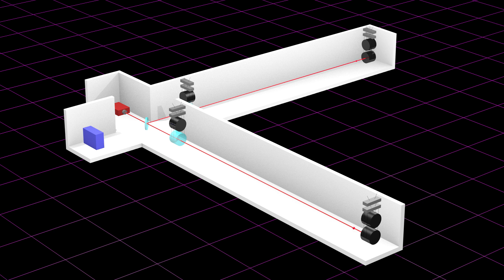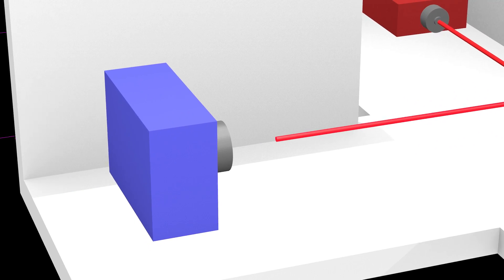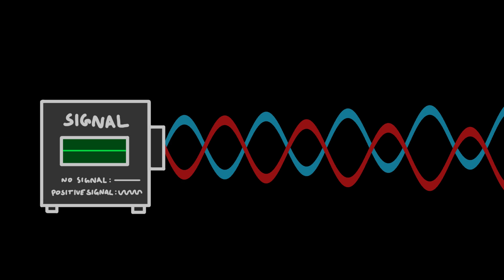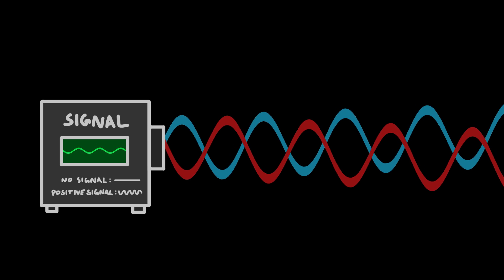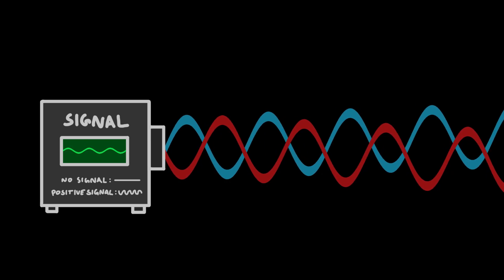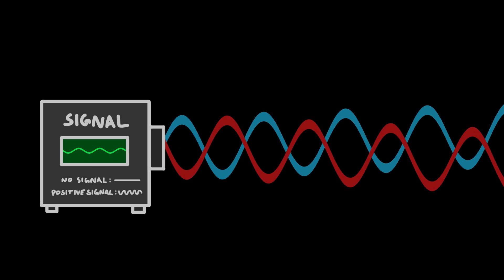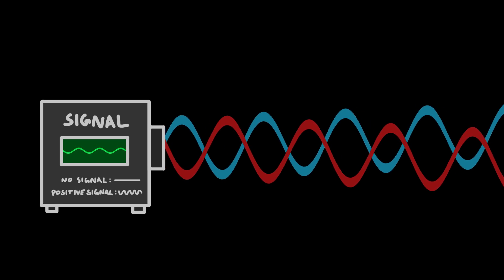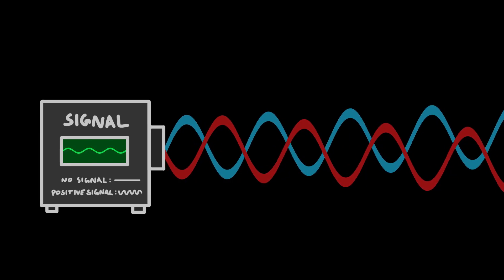Then after its journey the light is collected and recombined in such a way that if the arms are the same length the light from each arm cancels out producing no signal. But if a gravitational wave ripples past it will stretch or contract each of the arms making the light from each arm arrive at the detector at slightly different times. That means that when they're recombined they will no longer fully cancel out and a signal will appear.